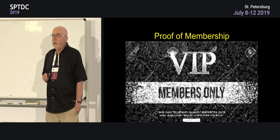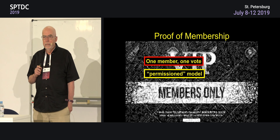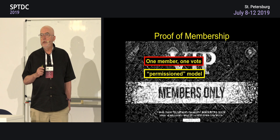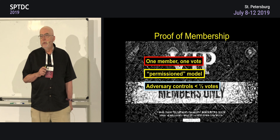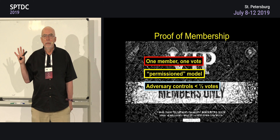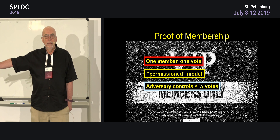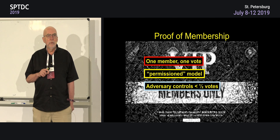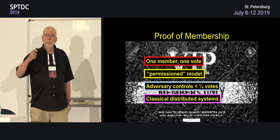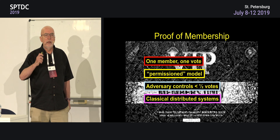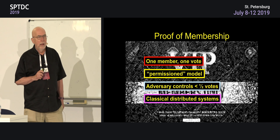One question is how do you prove that you have the right to vote? This is called the permission model — you show you have permission to vote because you are, say, a French citizen. As long as the adversary can't bribe a majority, the system is fair. If 51% of the people vote for the honest, correct answer, then we're okay. This is pretty much how classical distributed systems work — sometimes it's a third, sometimes it's a half. You establish that you have the right to vote, and then the focus is on how the voting works.